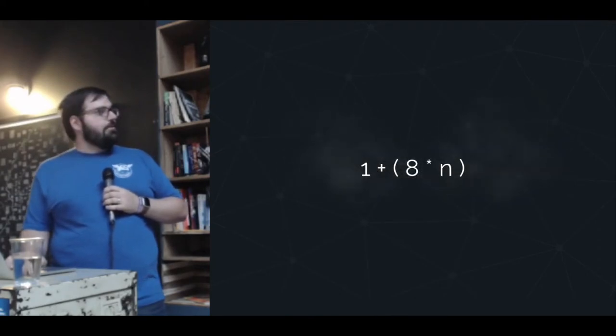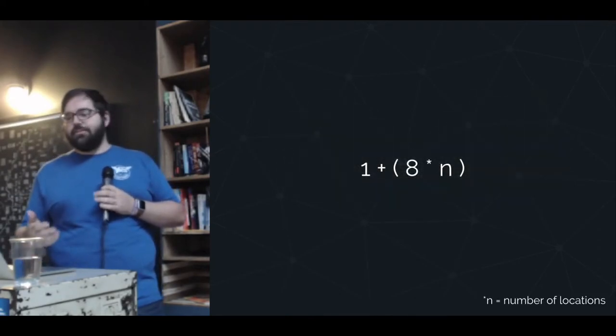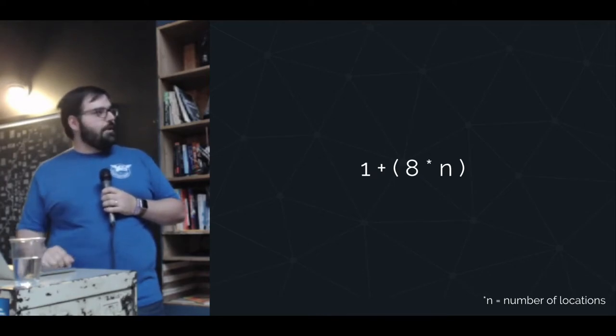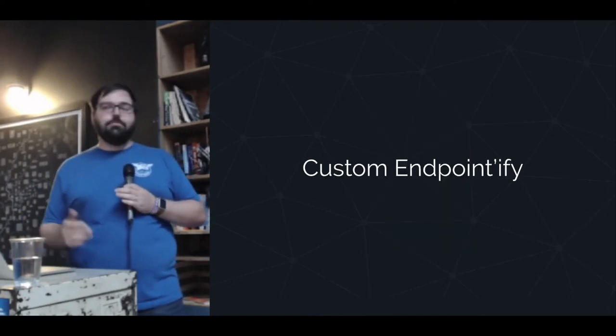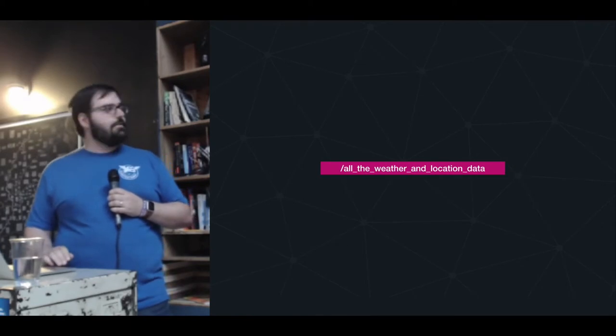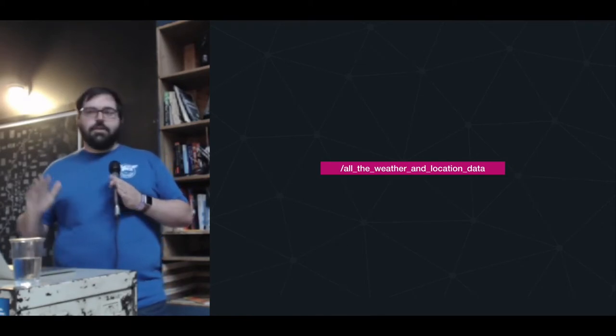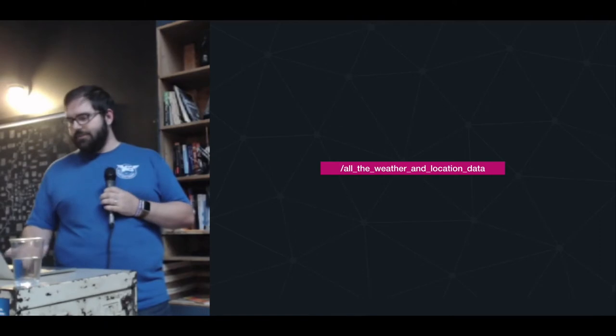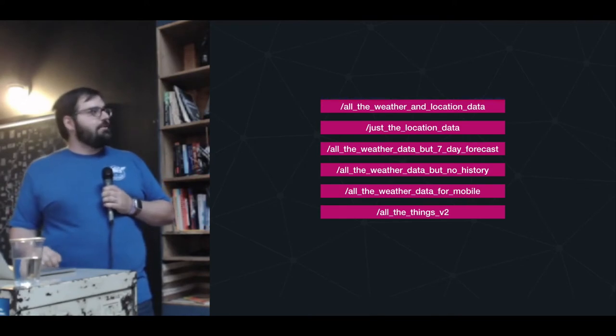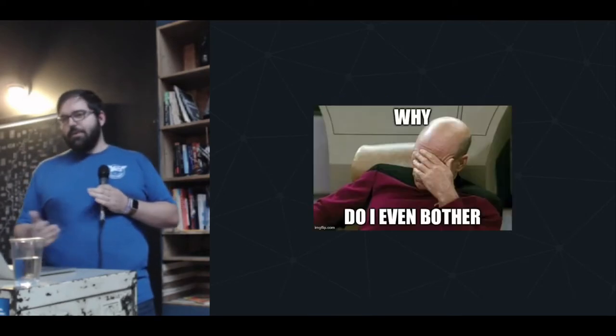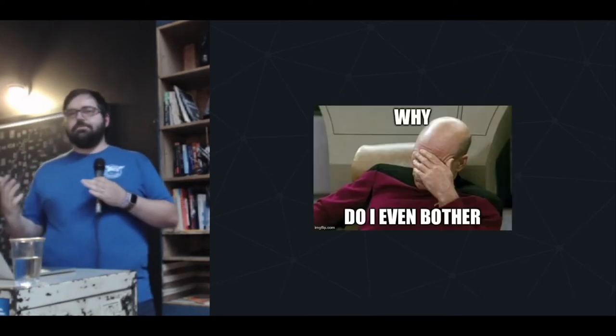Which leads us, in total, to one plus eight times N — where N is the number of locations — for our initial network call. The more eagle-minded among you may say, we'll just custom-endpointify it and put all the weather and location data in one call. Except then we get into the issue of: what if we just want the location data, or a seven-day forecast, or no history, or just all the things? And we get back into our initial issue of endpoint proliferation.